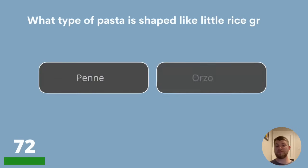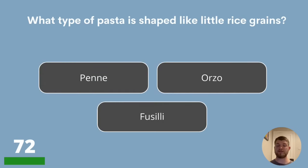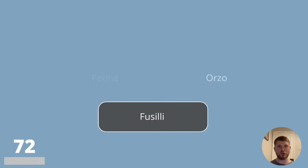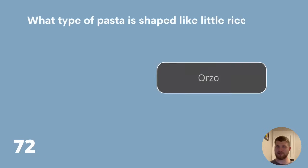Question 72. What type of pasta is shaped like little rice grains? Penne, Orzo or Fusilli? Penne is the tubes, Fusilli is the twists, and Orzo is the little rice grains — so the answer is Orzo.